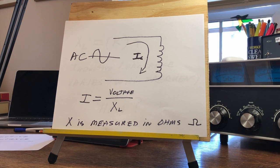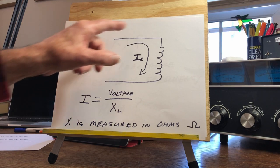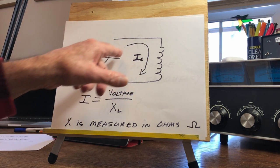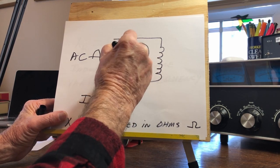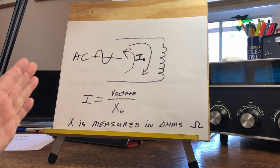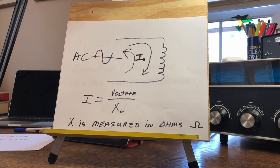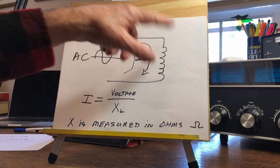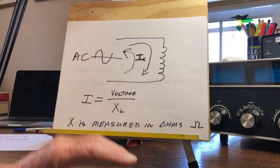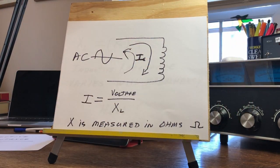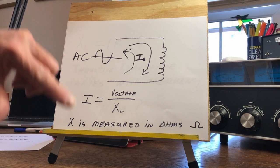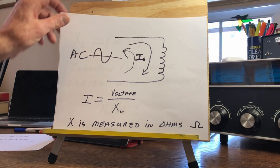When we switch from DC to AC, current will flow in one direction on the positive half of the cycle, then in the opposite direction on the negative half. With a resistor we'd be creating heat on both halves. But with a coil, we're building up a magnetic field on the first half of the cycle, then building up an opposite magnetic field on the second half — alternating back and forth.